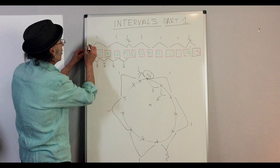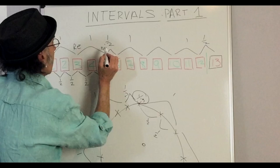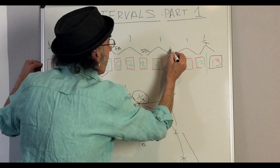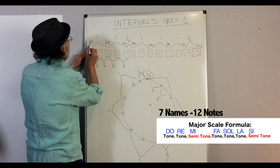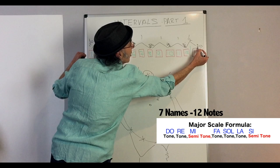The names we gave to these notes here, the notes we're playing in the scale, they're the only ones that got a name. And we called them, well, they were called, I didn't call them anything. Do, re, mi, fa, sol, la, si, do. Or, if you want, c, d, e, f, g, a, b, c.